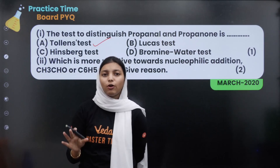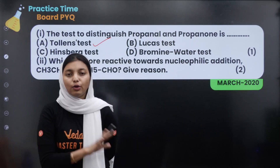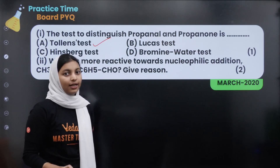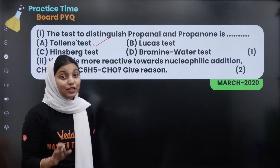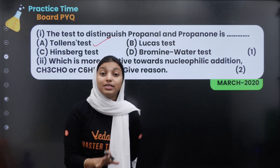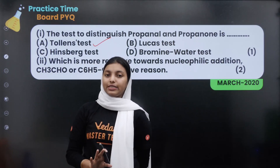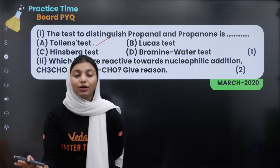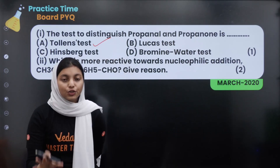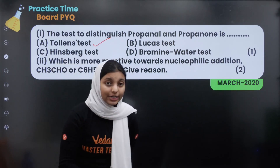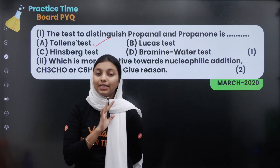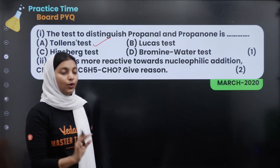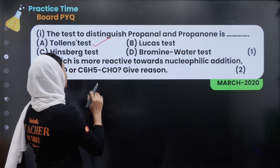Aldehydes will give a positive Tollens test and Fehling's test. Ketones will not give Tollens test or Fehling's test. So the answer is aldehydes.